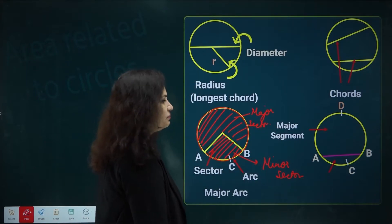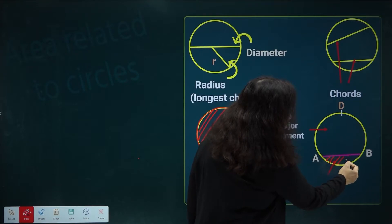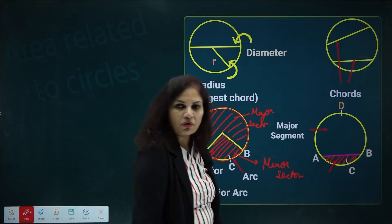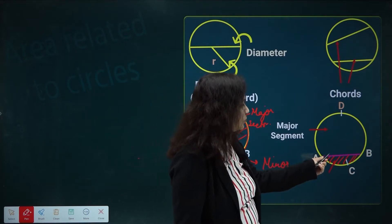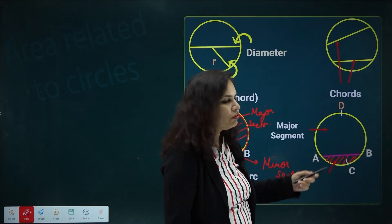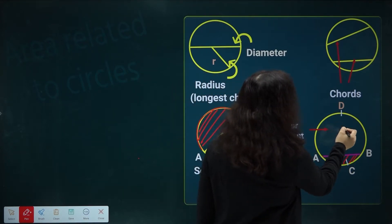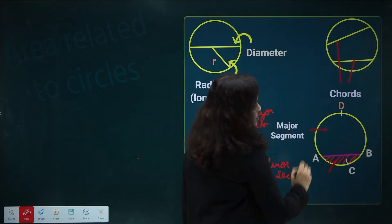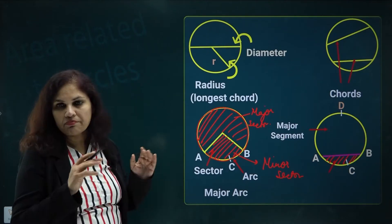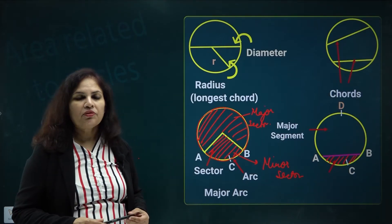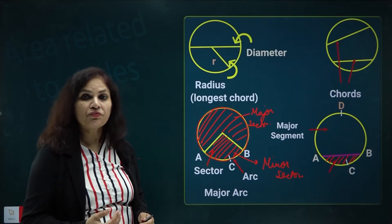Similarly, a segment is a region which is formed by a chord and the corresponding arc. If AB is the chord, the lower region is the minor segment and the larger portion is the major segment. We must have a clear idea about major and minor sector and major and minor segment before we move to the areas related to circles.